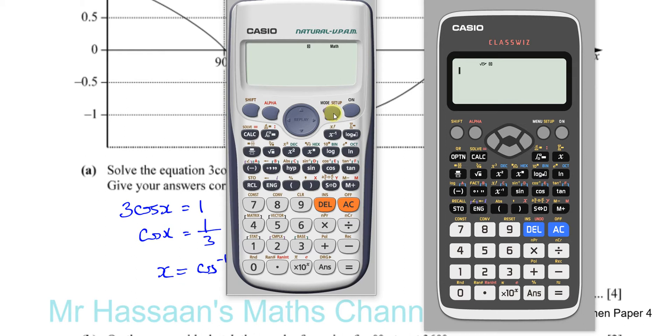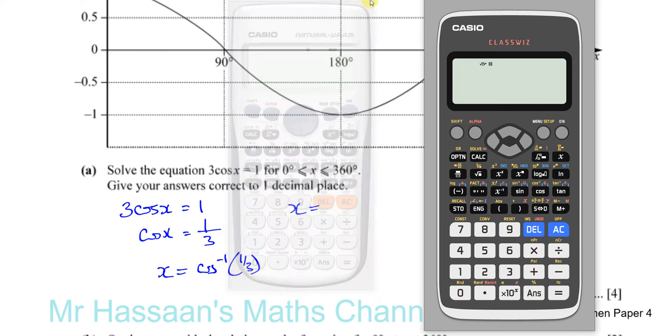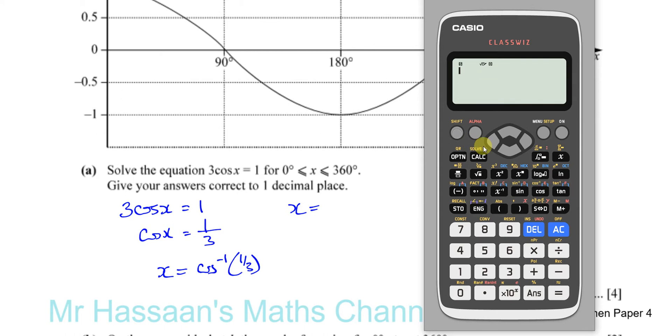I'll show you in case some of you have a different calculator. In a different calculator like this one, for this calculator you press shift and then mode and then you choose 3 for degree. That makes it to degree mode. That's for that type of calculator.